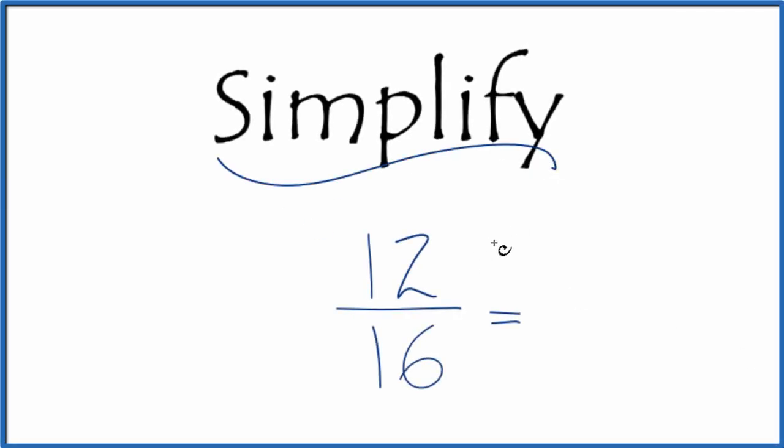Let's simplify the fraction 12/16. What we want to do is figure out another fraction that's equal to 12 over 16 but is in lowest terms. To do that, we need to find the greatest common factor.